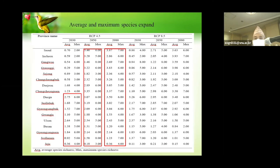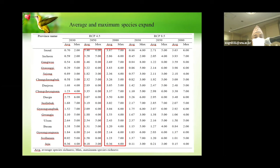We calculated the actual habitat expansion area in each province. In the future, the provinces located in northern regions — for example Sejong, Gyeonggi, Gangwon, Incheon, and Seoul — show relatively high expansion of habitat compared to other places.